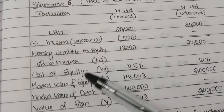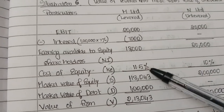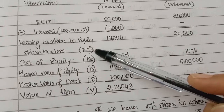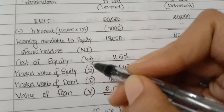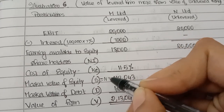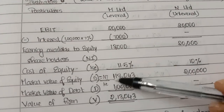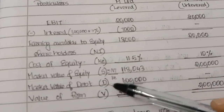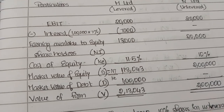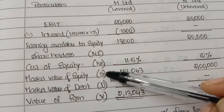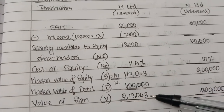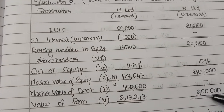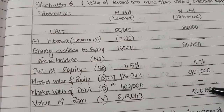The cost of equity of M Limited is 11.5% and N Limited is 10%. We find the market value of equity by dividing earnings available to equity shareholders by the cost of equity: Market Value of Equity = NI / Ke. This gives 1,13,043 rupees for M Limited and 2 lakh rupees for N Limited. The market value of debt for M Limited is 1 lakh (as given), and nil for N Limited. Adding these gives the total firm value: 2,13,043 rupees for M Limited and 2 lakh for N Limited. The value of the levered firm is greater than the unlevered firm.